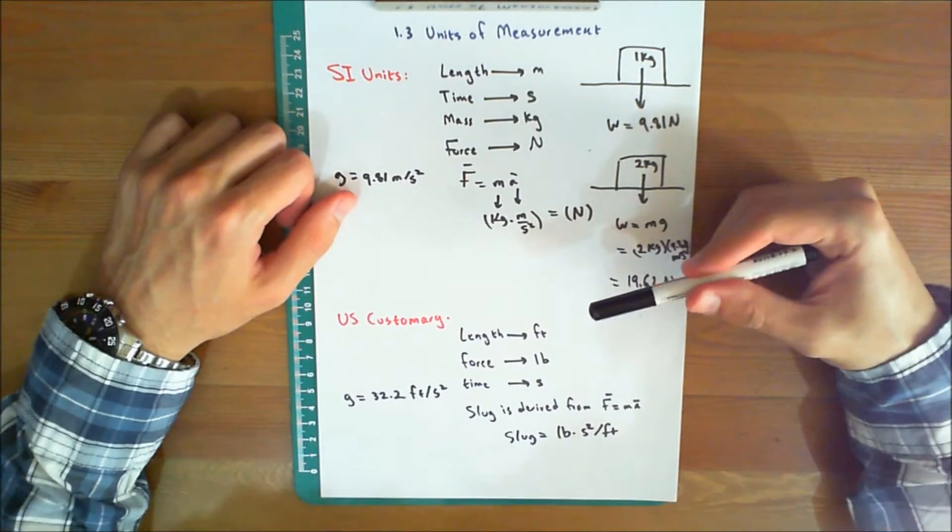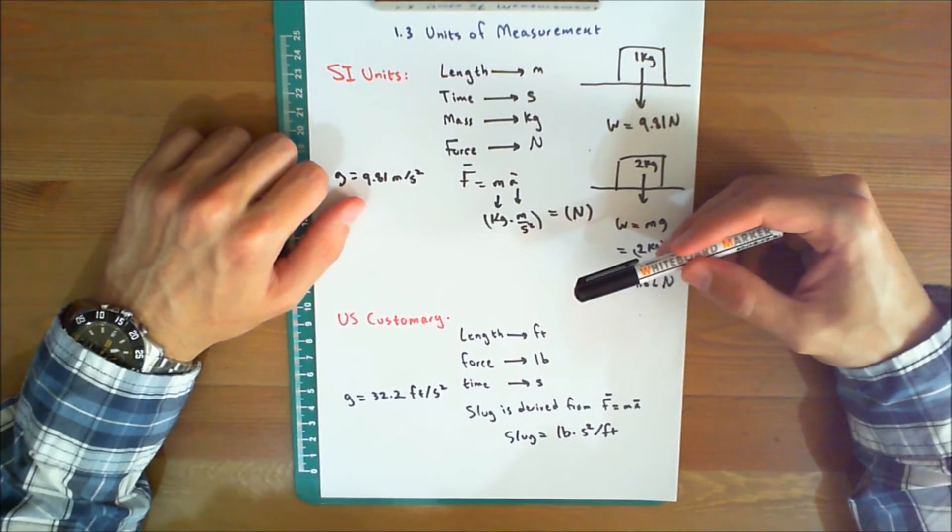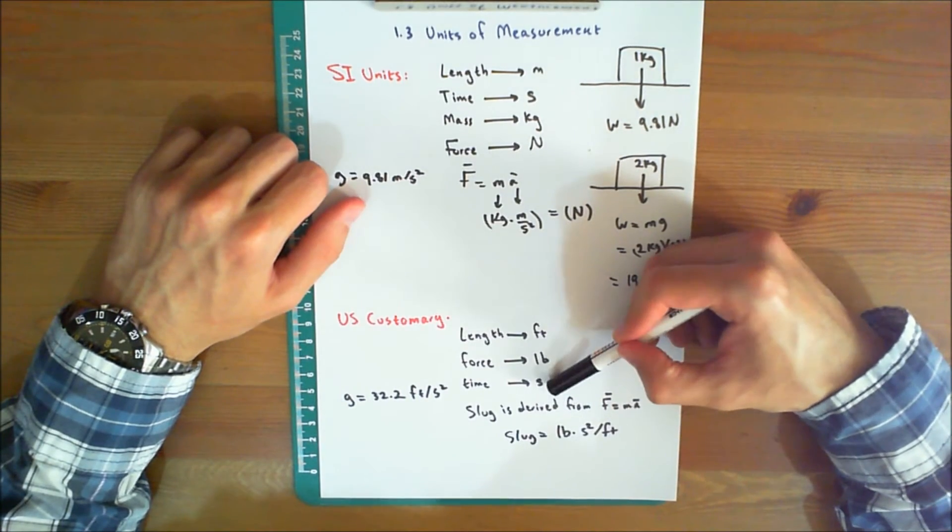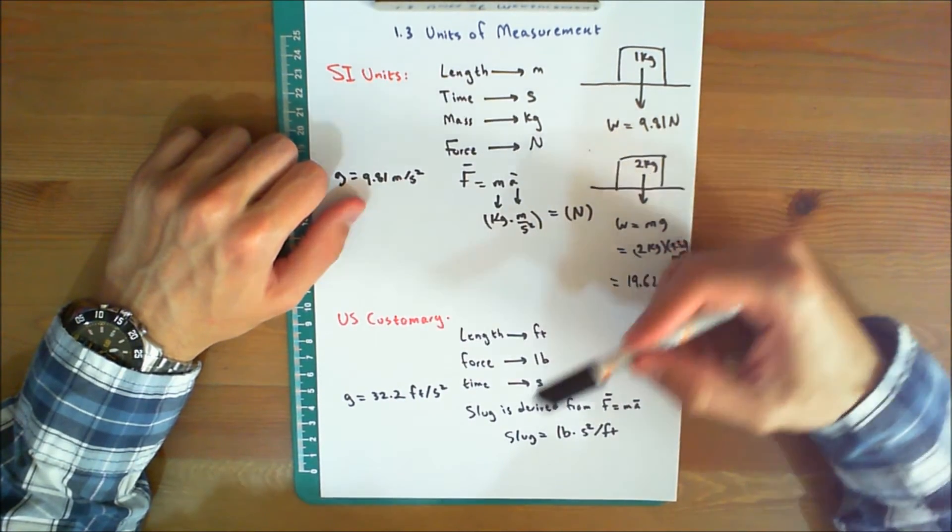U.S. Customary. In the U.S. Customary system of units, FPS, length is measured in feet, force in pounds, and time in seconds. The unit of mass, called a slug,